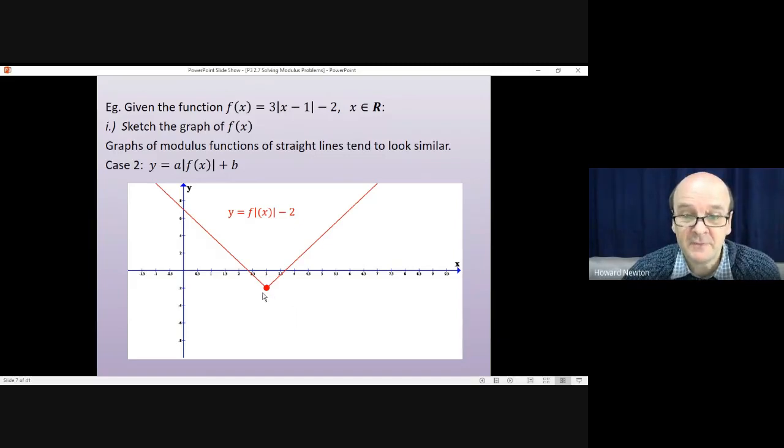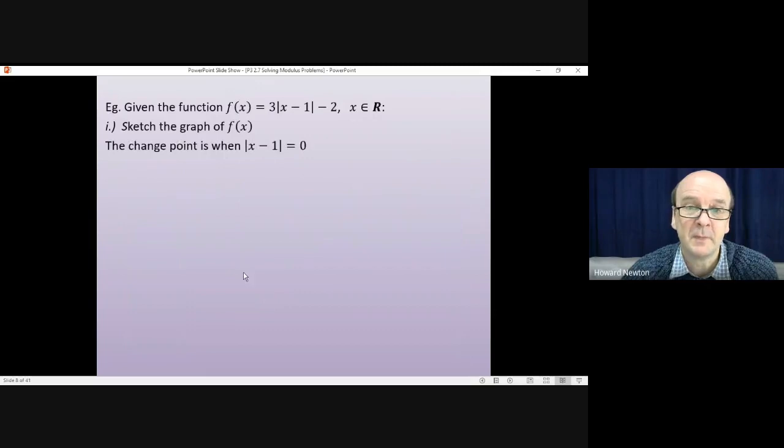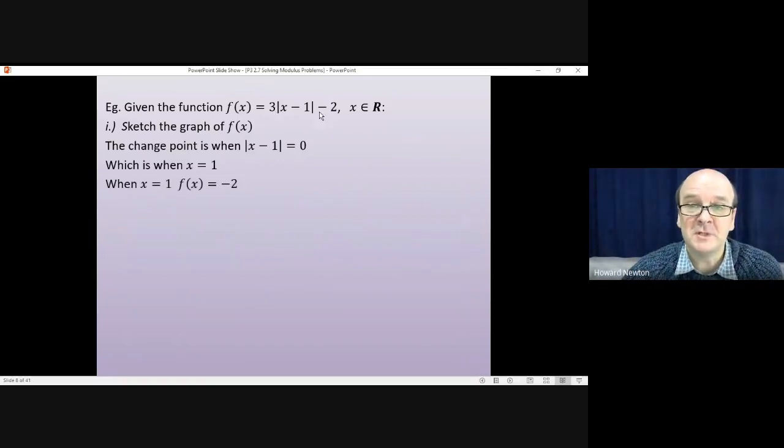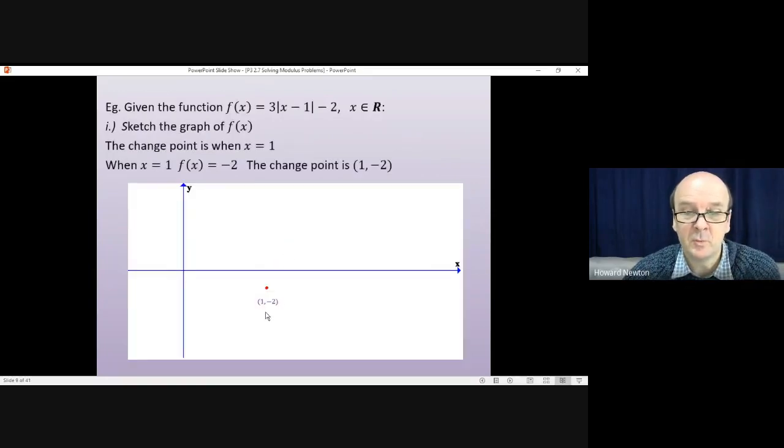This point where the two lines meet is a very critical point. And if I was drawing this graph, the first thing I would do is find this point, because I know the one line's going to go up from it in that direction, and the other line's going to head up to the left from there. Well, how do we find it? This point is where the modulus is equal to zero. If it's greater than zero, you get the one half. If it's less than zero, you get the other half. If it's equal to zero, you get the point where the two halves meet. So we need to solve that. When does that equal zero? Well, it's when x equals one. That means the x-coordinate of that point is one. Substitute one into the original function, and you get zero take away two. So the value of the function, or the value of y, is minus two. Coordinates of that point, then, will be one minus two.